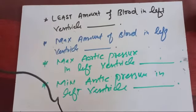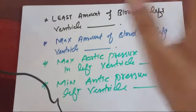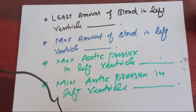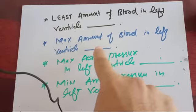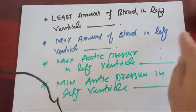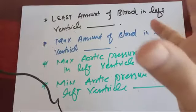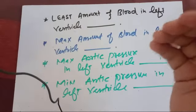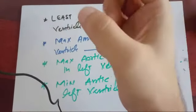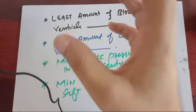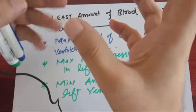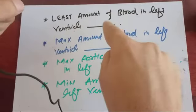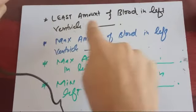Maximum amount of blood in the left ventricle is reached during late diastole — that is atrial contraction or the slow filling phase. If the question asks which phase it is present in, the answer is isovolumetric contraction. The least amount of blood in the left ventricle is achieved during the ejection phase — early ejection and late ejection — and is reached at the end of systole.